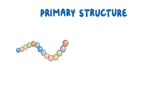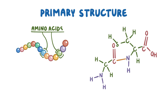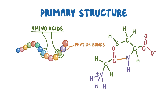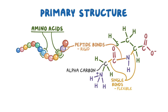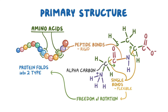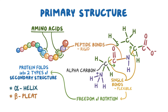When it comes to proteins, the primary structure is simply a linear sequence of amino acids connected through peptide bonds, like a string of pearls. The peptide bonds between amino acids are very rigid, but by comparison the single bonds connecting the amide functional group of the peptide bond to the alpha carbon are flexible. That allows significant freedom of rotation, and through that rotation the protein can fold into one of two types of secondary structure: alpha helix or beta pleated sheets.